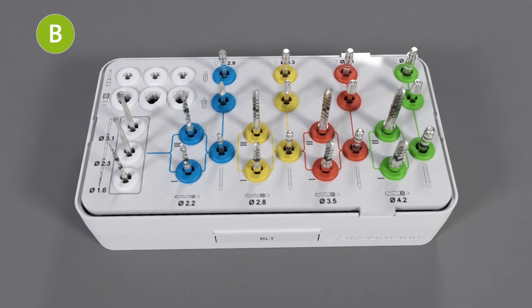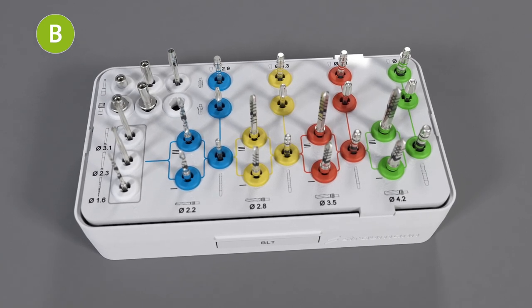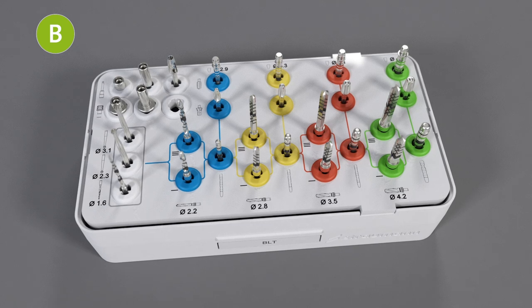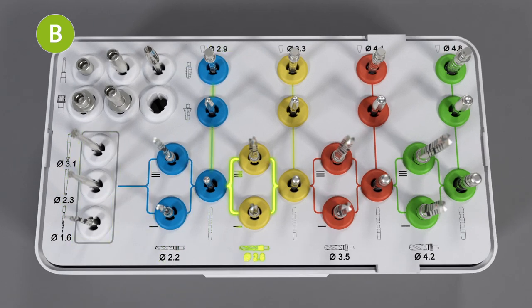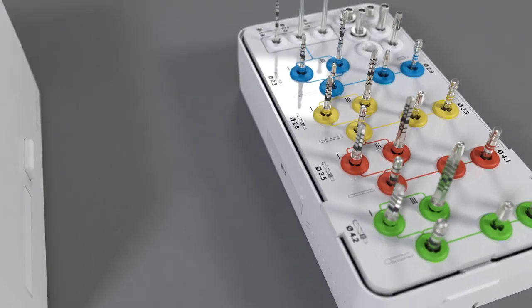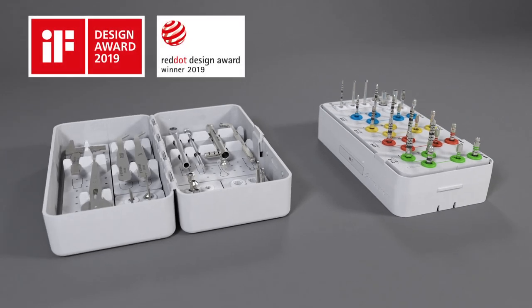On the upper left, the adapters are stored. Pictograms on the tray help to find the right place for each tool and the colors indicate their diameter. Your cassette is set up for BLT freehand surgery.